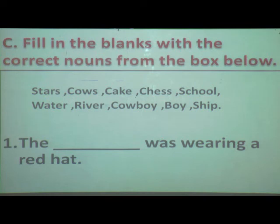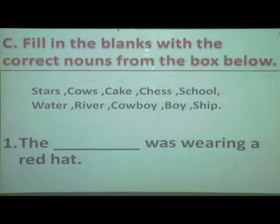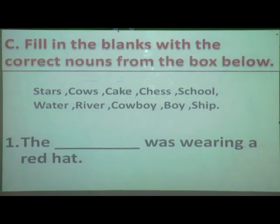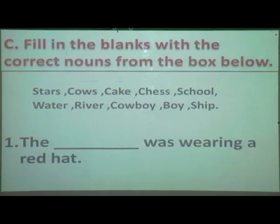Can you see the nouns given in the box? You have to read each sentence and decide which noun from the box should go in the blank. The nouns given are: stars, cows, cake, chess, school, water, river, cowboy, boy, and ship. I will just put the number on each noun in the box, and afterwards you can copy into the blanks. Due to shortage of time, just put the numbers first.